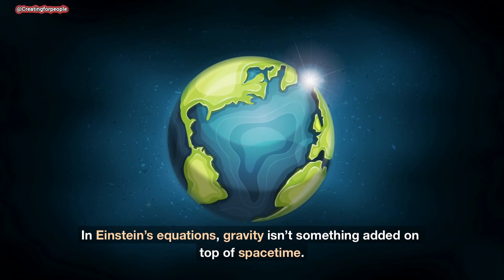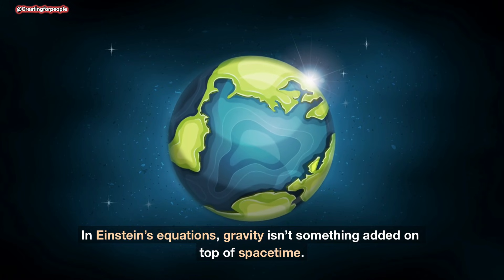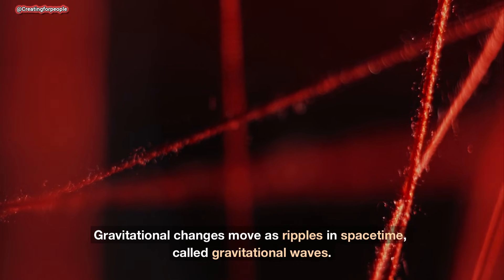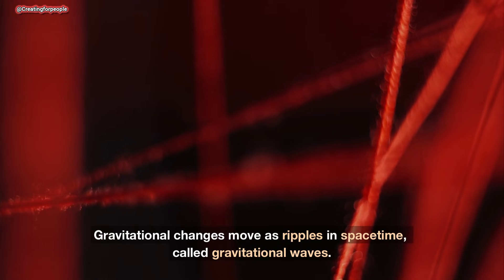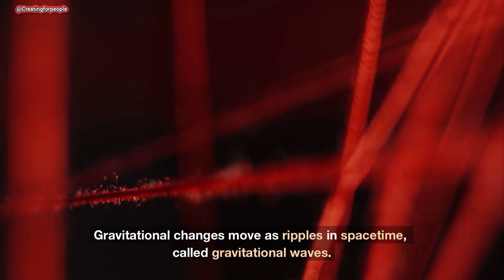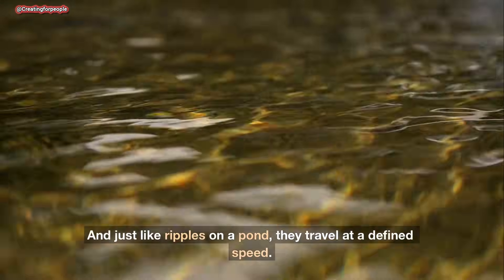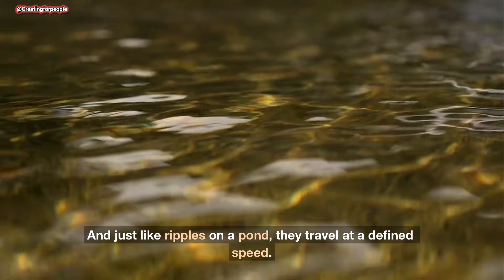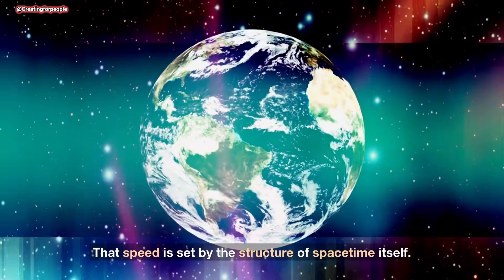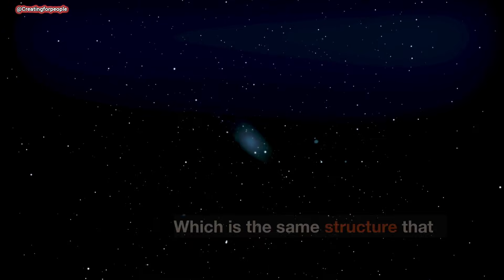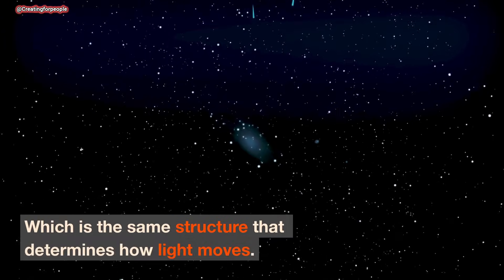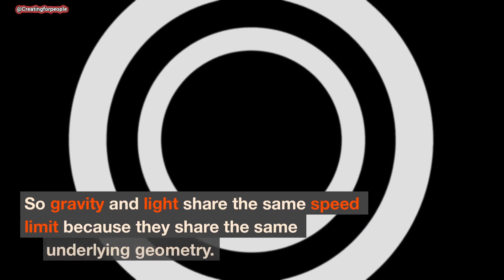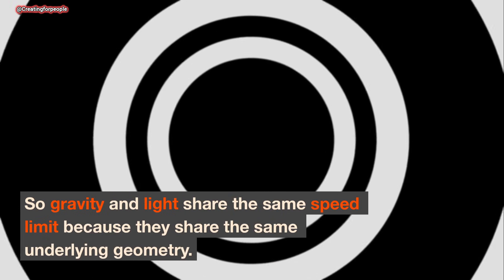In Einstein's equations, gravity isn't something added on top of space-time. It is space-time. Gravitational changes move as ripples in space-time, called gravitational waves. And just like ripples on a pond, they travel at a defined speed. That speed is set by the structure of space-time itself, which is the same structure that determines how light moves. So gravity and light share the same speed limit because they share the same underlying geometry.